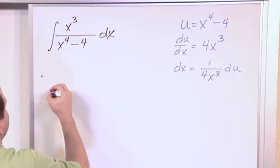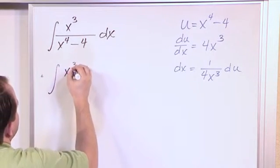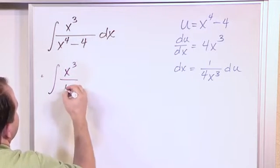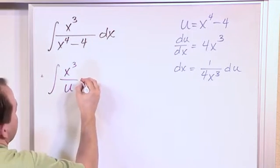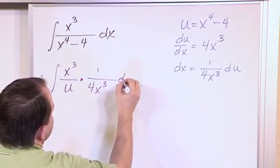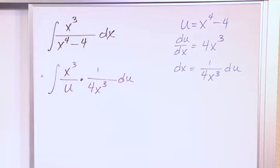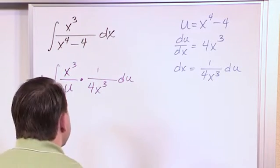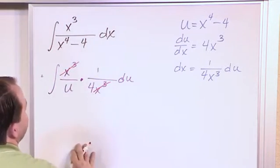So what we'll have is we'll have the integral of x cubed over, this stuff just resolves to u, because that's our substitution. dx is 1 over 4x cubed du, like this. And then we cancel our x cubes with our x cubes.